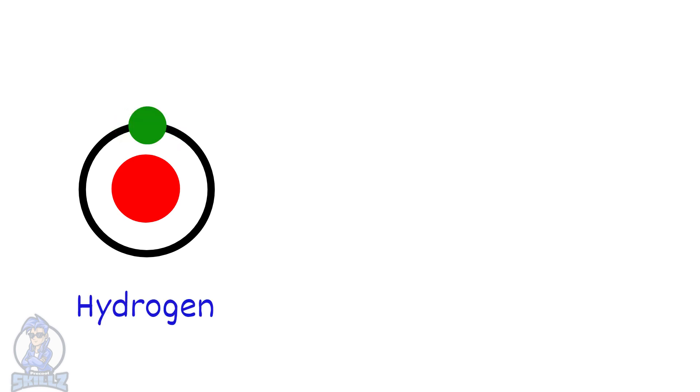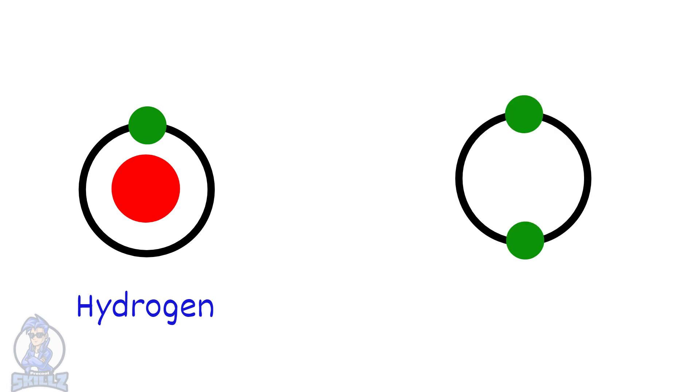When we draw atoms, we draw them like this, with circles to represent the shells. We can then draw dots or crosses on these circles to represent electrons. Here are a few examples: hydrogen and helium.